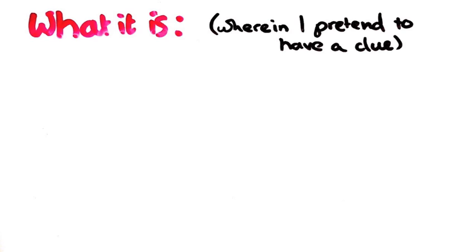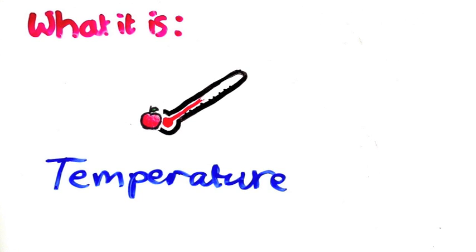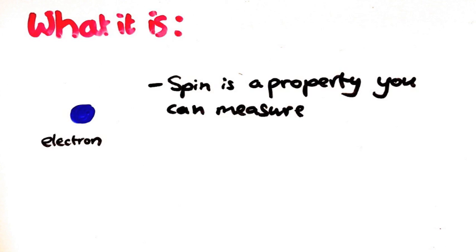Firstly, what is it? We know that normal objects can have all kinds of measurable properties like position, speed, temperature, etc. Spin is another one of these properties that you can measure of a particle.